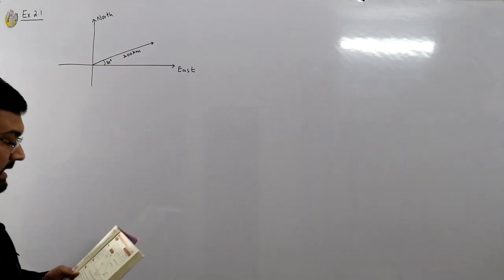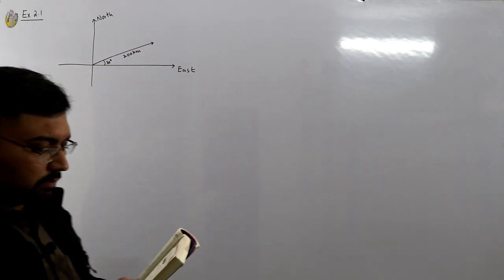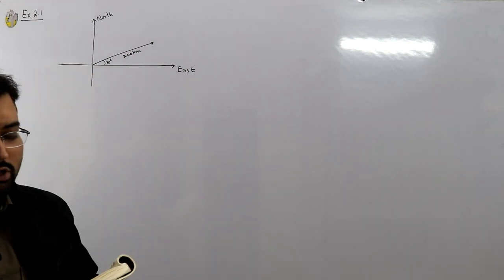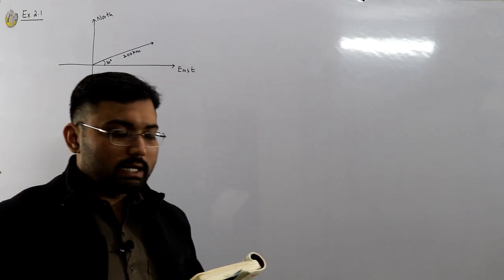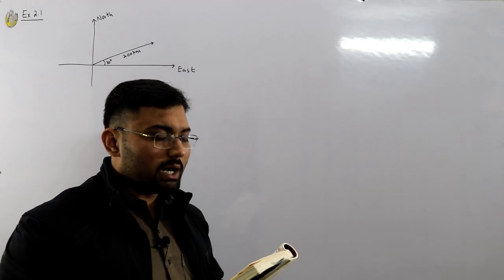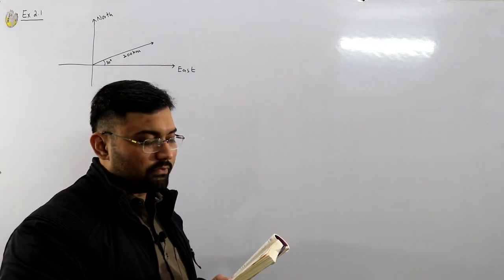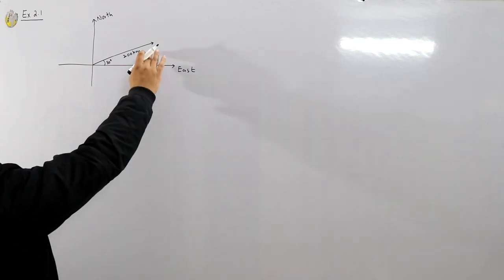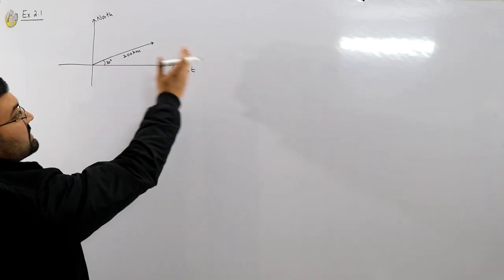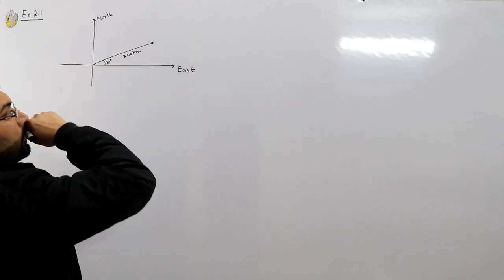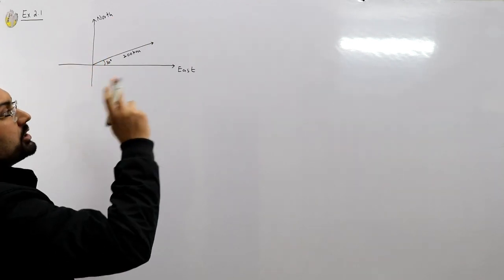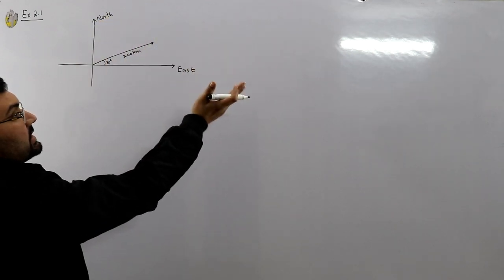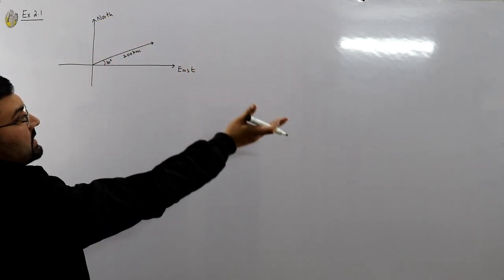Ab kya keheta hai ki ish point per — then it changes direction and travels 350 kilometers in a direction 140 degrees north of east. So from east, this second leg makes an angle of 140 degrees north of east.